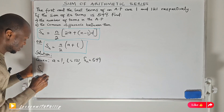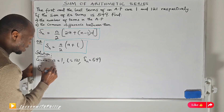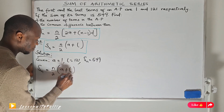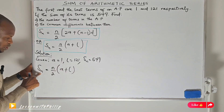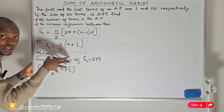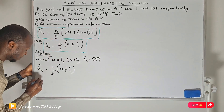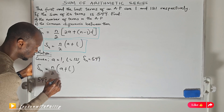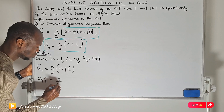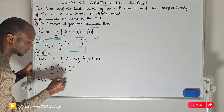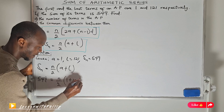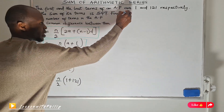Since I know the formula to use: the sum of AP equals n divided by 2 into bracket first term plus last term. The sum is 549, so I substitute: 549 equals n divided by 2, into bracket 1 plus 121.